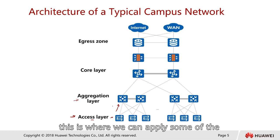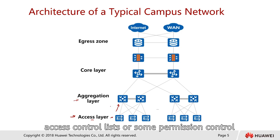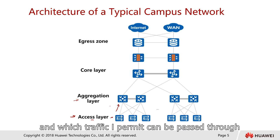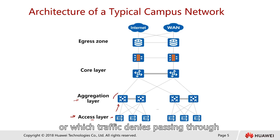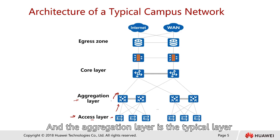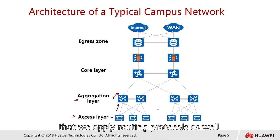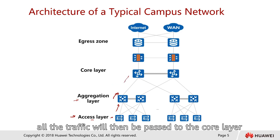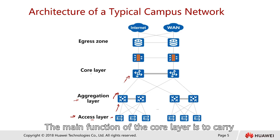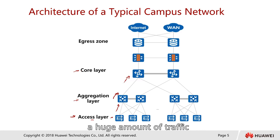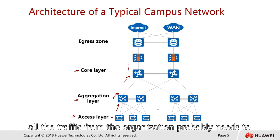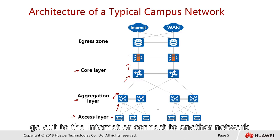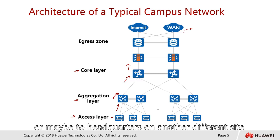The second layer is called the aggregation layer. All the traffic from the access layer will go up to the aggregation layer. At the aggregation layer, this is where we can apply some access control lists or permission controls — which traffic is permitted to pass through or which traffic is denied. The aggregation layer is also the typical layer where we apply routing protocols.